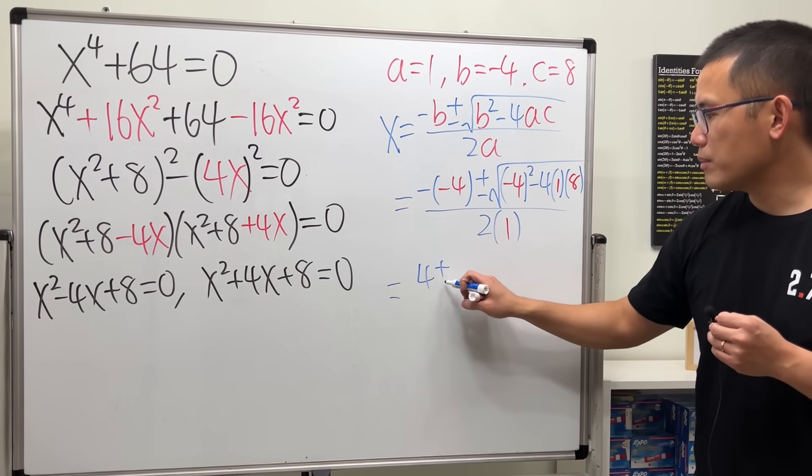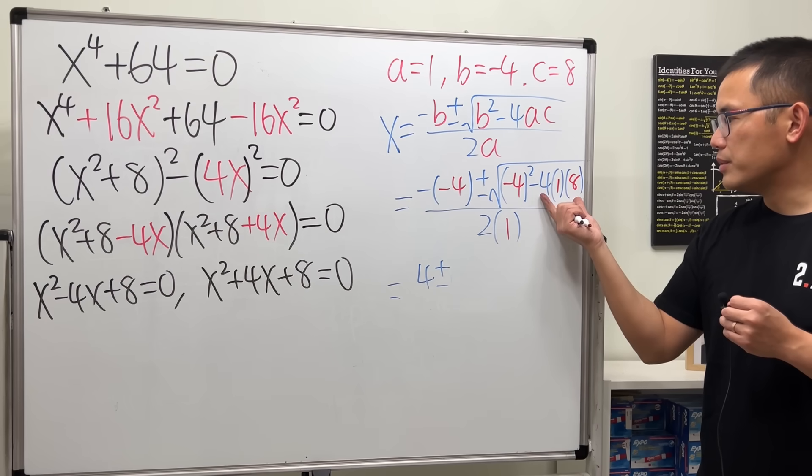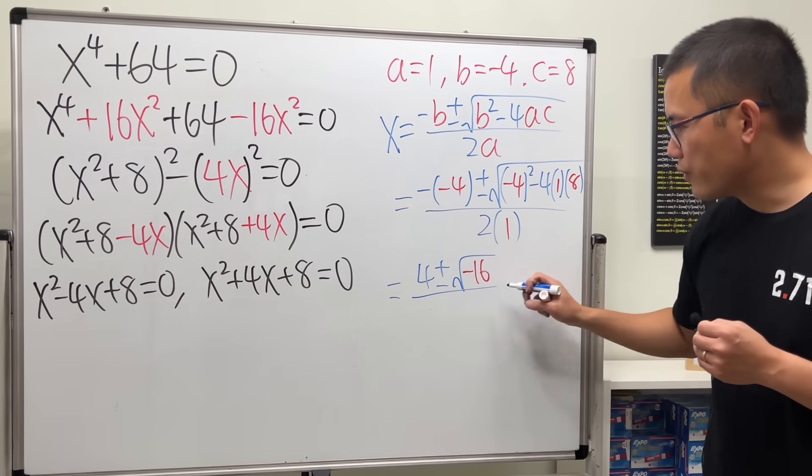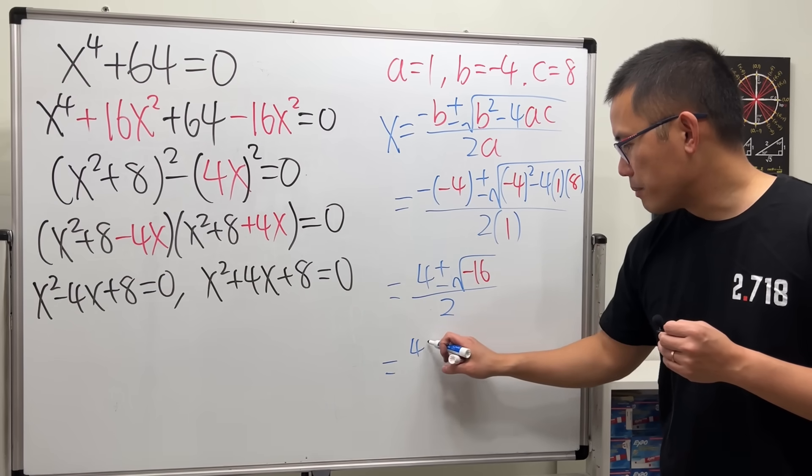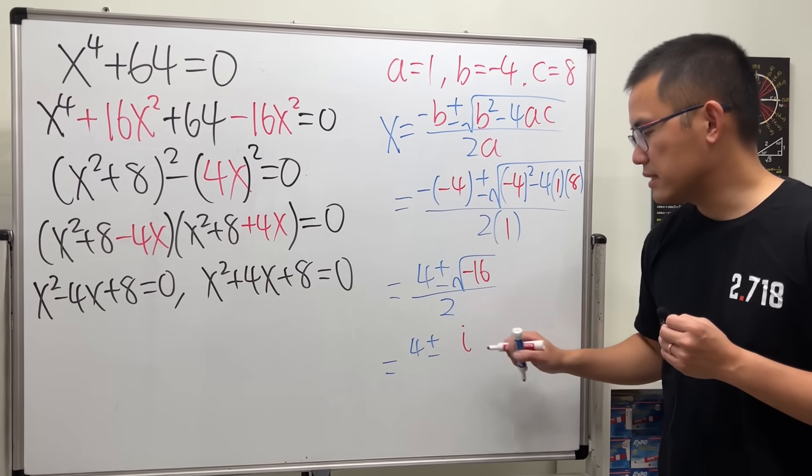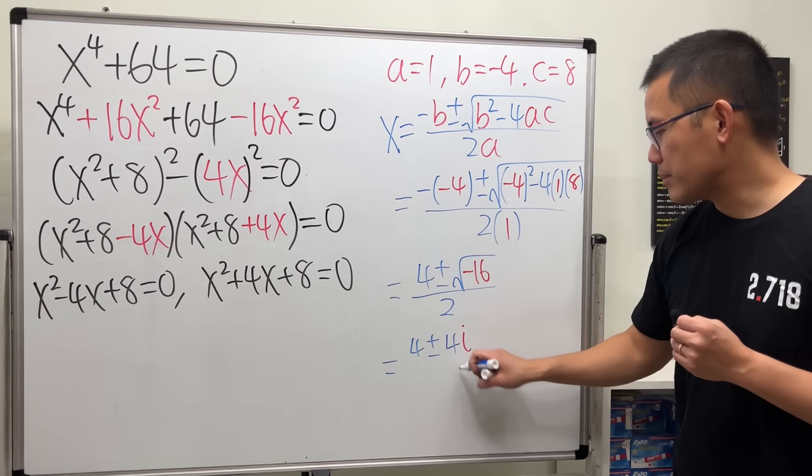So, that's 4, plus or minus, that's 16, minus 32, is negative 16, over 2. Now, this is 4 plus or minus, because we have the negative inside the square root, that gives us the i. And then, square root of 16 is just a nice number 4.